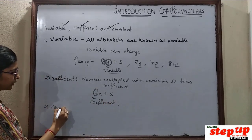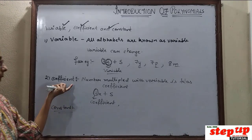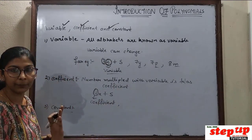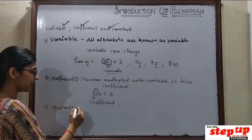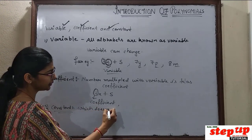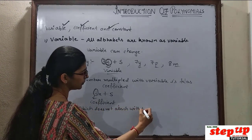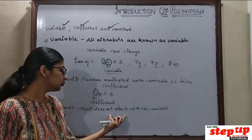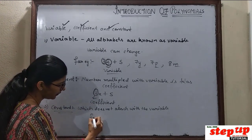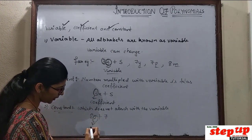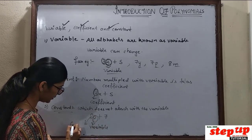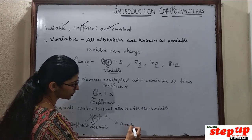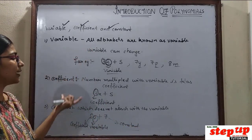Next, the third one: Constant — simple. Which number is not attached with the variable, which is completely separate from the variable, that thing does not change — it remains as it is. So in simple language, the number which is not attached with the variable, separated by plus or minus, that is called a constant. For example, 8p plus 7 — here p is the variable, 8 is the coefficient, and 7 (separated by plus) is the constant. These are the three things you need to remember.